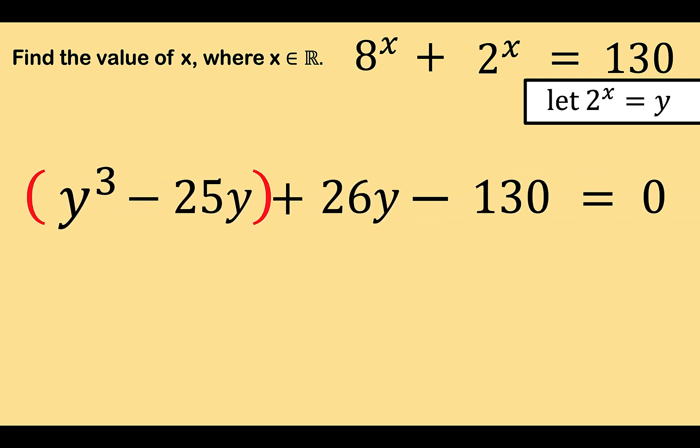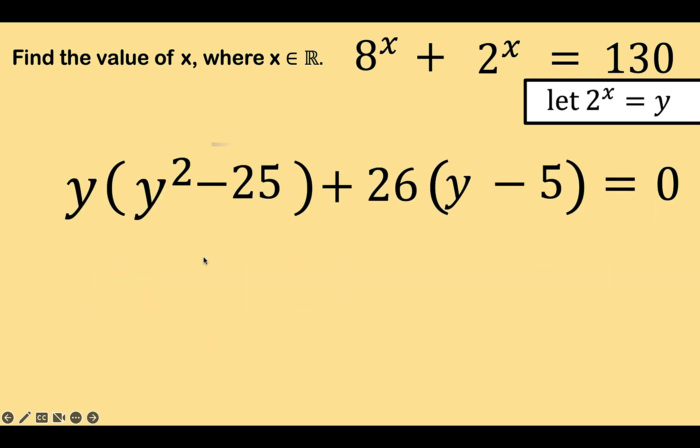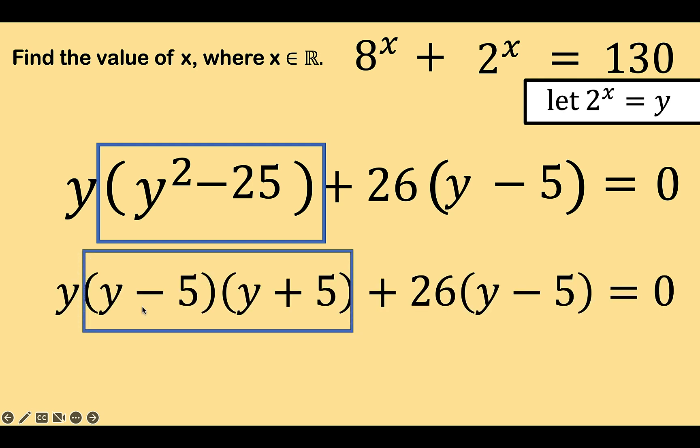Now let's group together the first two terms and the last two terms this way. Notice that in the first group, there is a common variable y that we can factor out. So y cubed divided by y is y squared, minus 25y divided by y is minus 25. Copy the plus sign and factor out the common factor 26. So 26y divided by 26 is 1y or simply y. Negative 130 divided by 26 is negative 5. Notice that we have here a difference of two squares. So we can now factor this out as two factors: y minus 5 times y plus 5.